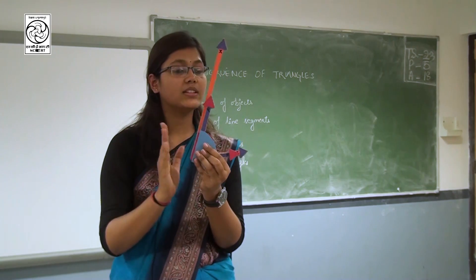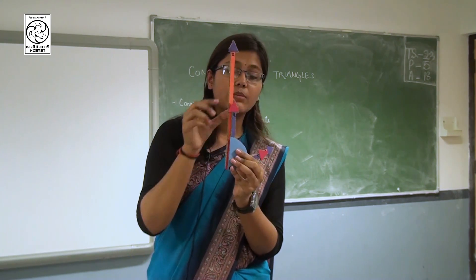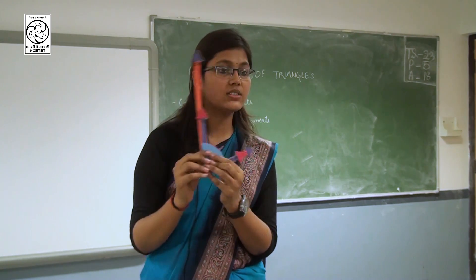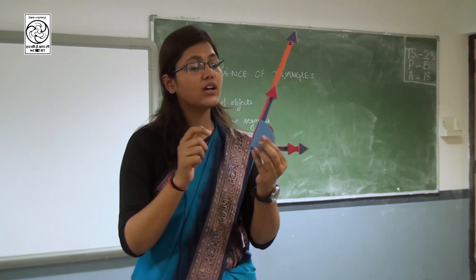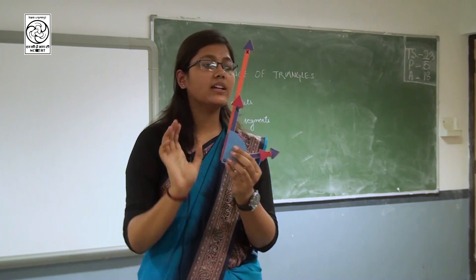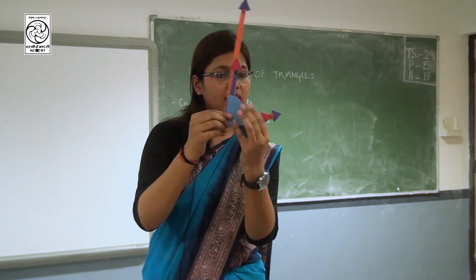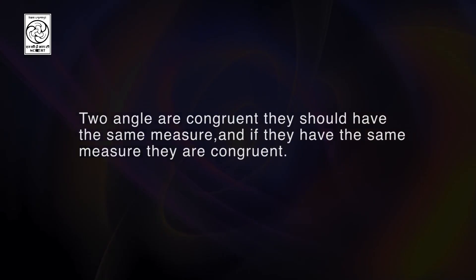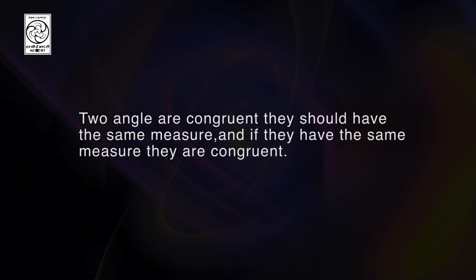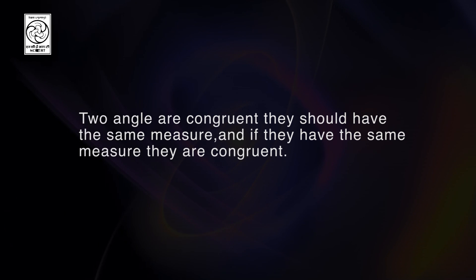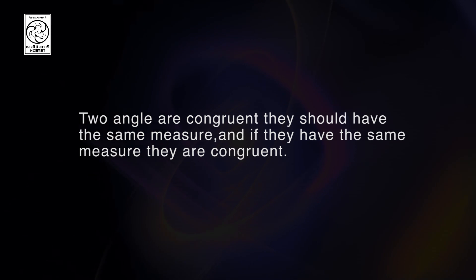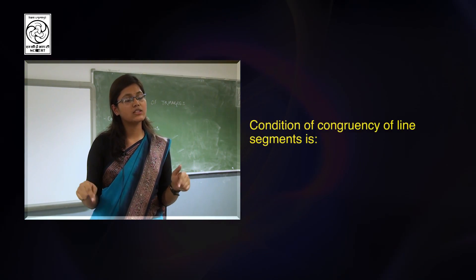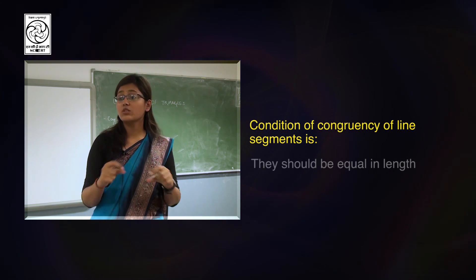Be clear about this — the length of the arm does not matter. Why? Because it is a ray. This arrow mark means it is a ray, so it can be extended. The angle should be congruent, meaning the angle measure should be the same. So if two angles are congruent, they have the same measure, and if they have the same measure, they are congruent. The condition for congruency of an angle is that they should measure equal, and for a line segment, they should be equal in length.